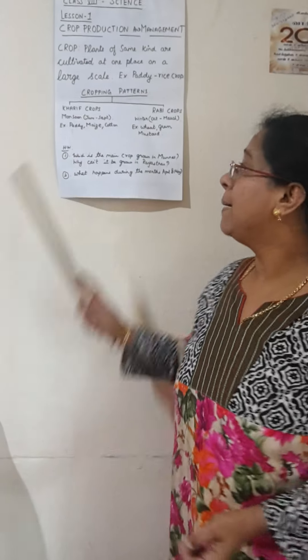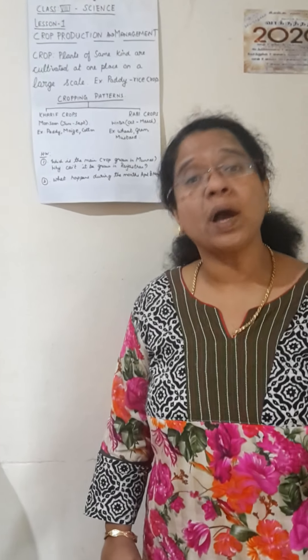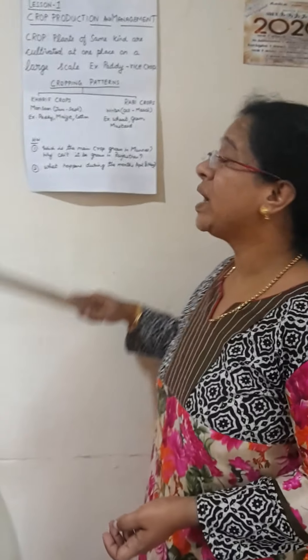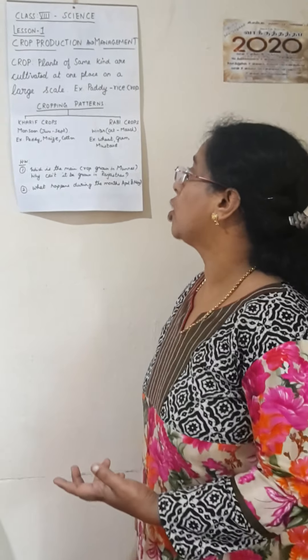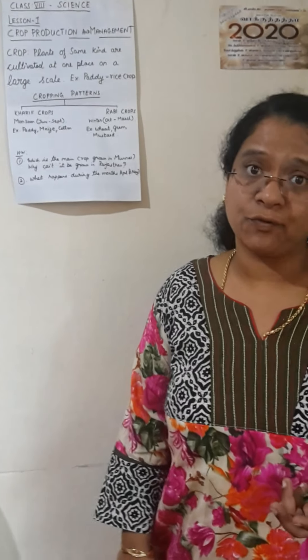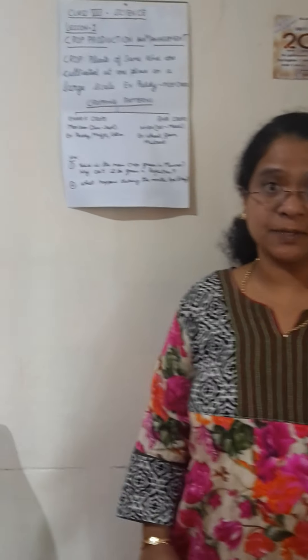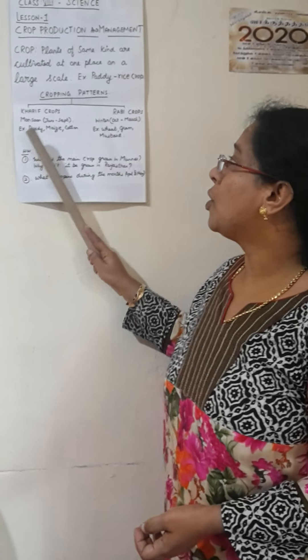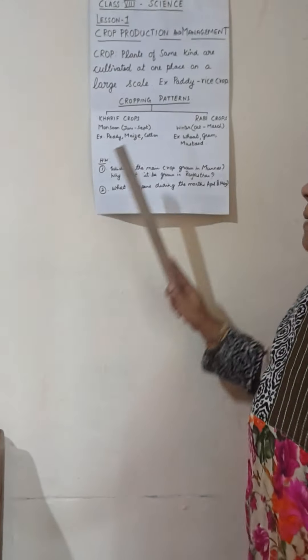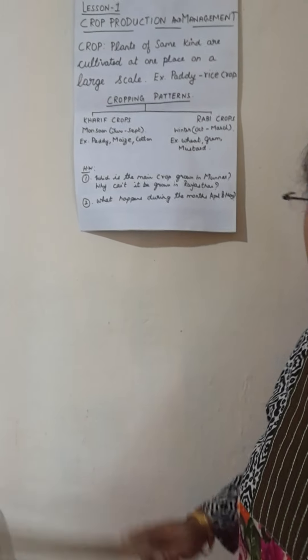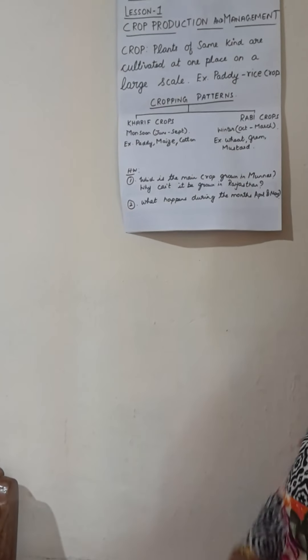Paddy is a crop of rice that requires a lot of water, so crops requiring a lot of water are grown during the monsoon season and are called kharif crops. Crops which require less rainfall and low temperatures are grown during winter and are called rabi crops. Examples of kharif crops are paddy, maize, and cotton. Examples of rabi crops are wheat, gram, and mustard.